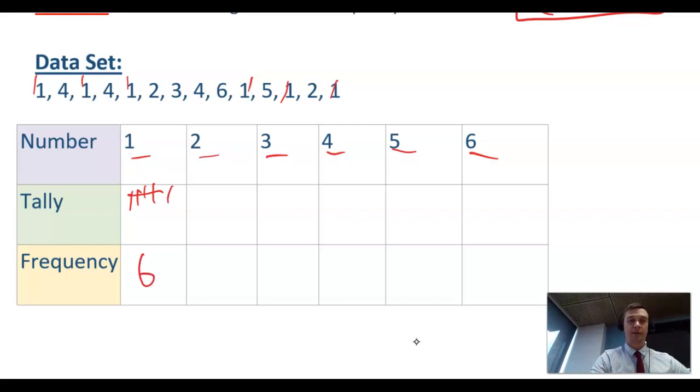For 2, I have 1, 2, so I've got 2, and I can write my frequency in. For 3, just the 1 there. For 4, I have 1, 2, 3. Then 5 and 6.